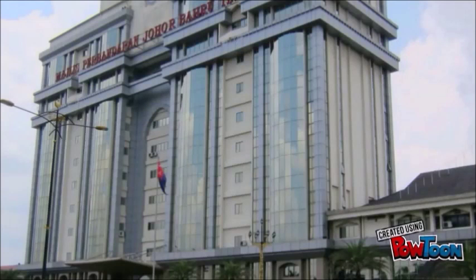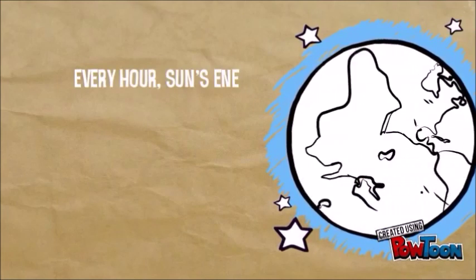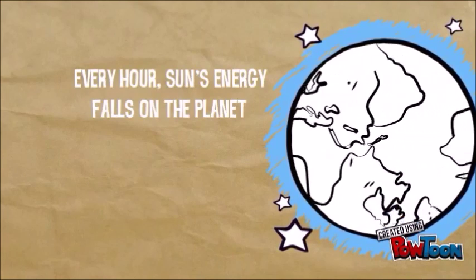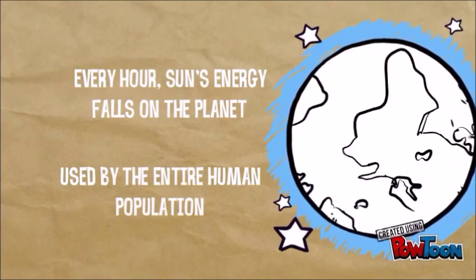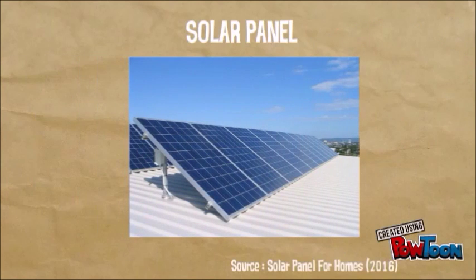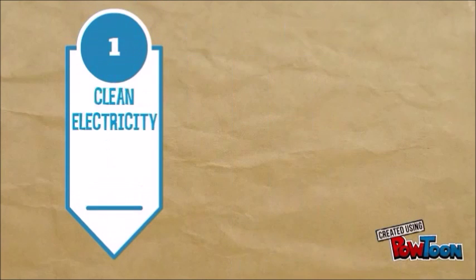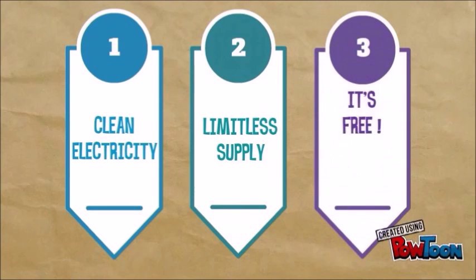Now we move to photovoltaic solar system. Every hour, the sun's energy that falls on the planet is equal to the amount of energy used by the entire human population every year. Therefore, solar panels are integrated to convert the energy to clean electricity from the limitless supply for free.